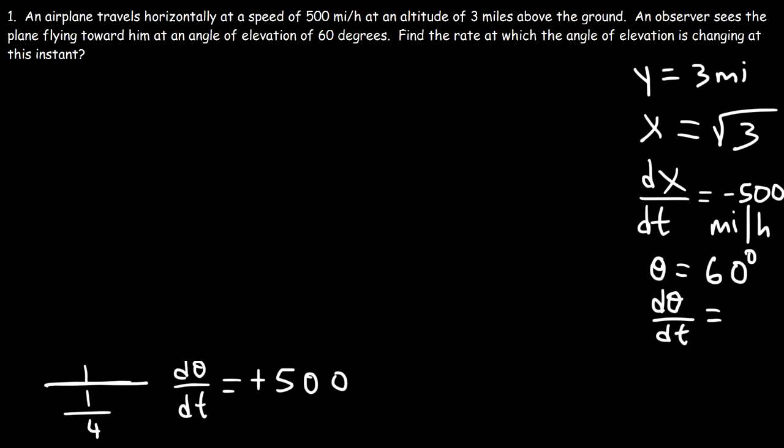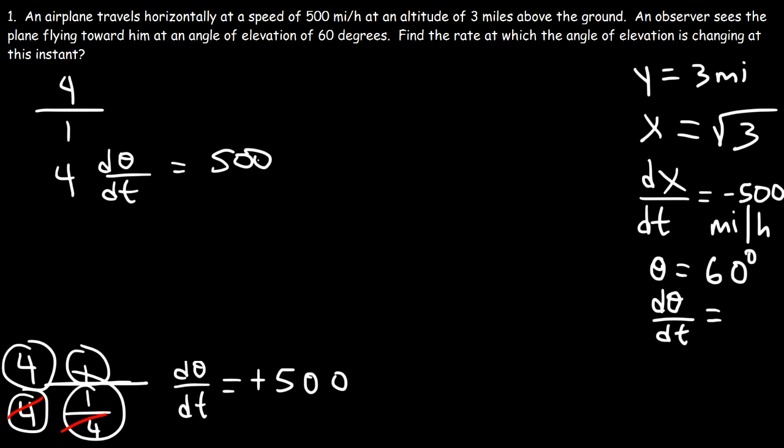Now what is 1 divided by 1 over 4? To simplify that complex fraction, multiply the top and the bottom by 4. So 4 times 1 is 4. And then 4 times 1/4, the 4s will cancel. And so you just get 1 on the bottom. And so 4 divided by 1 is just 4. So we have 4 times dθ/dt. And that's equal to 500. Dividing both sides by 4, 500 divided by 4 is 125.